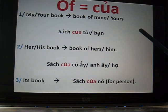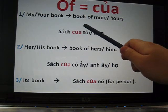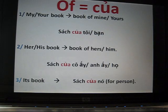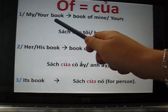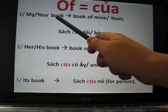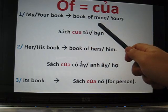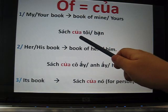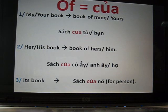What I want to emphasize is: of means của. Vietnamese is really easy — we just connect words by words. In English, we use my first and then the noun: my book. In Vietnamese, we use the noun first, then of, then the pronoun: sách của tôi. It is just words by words, and Vietnamese is really easy from that point of view.